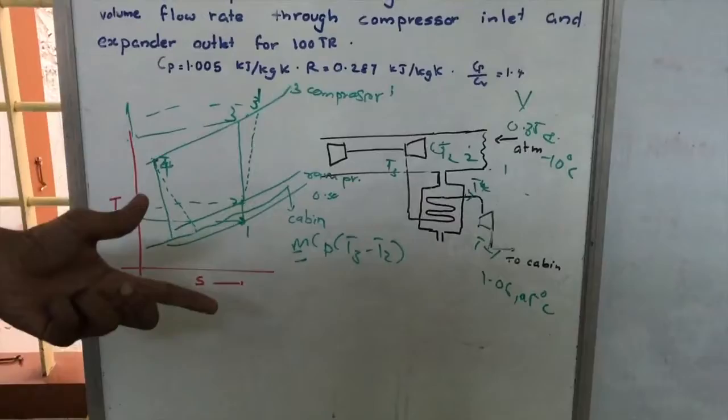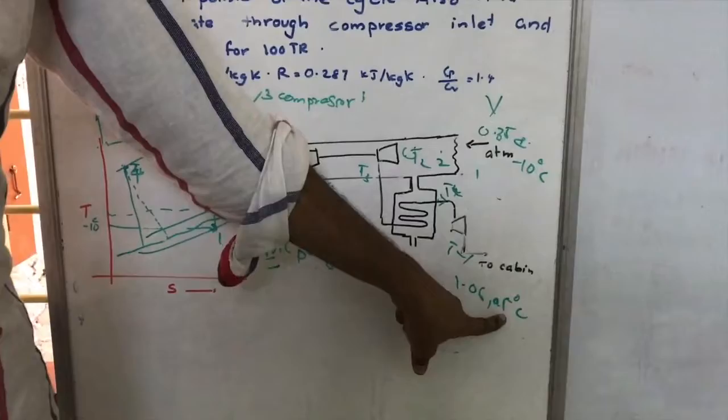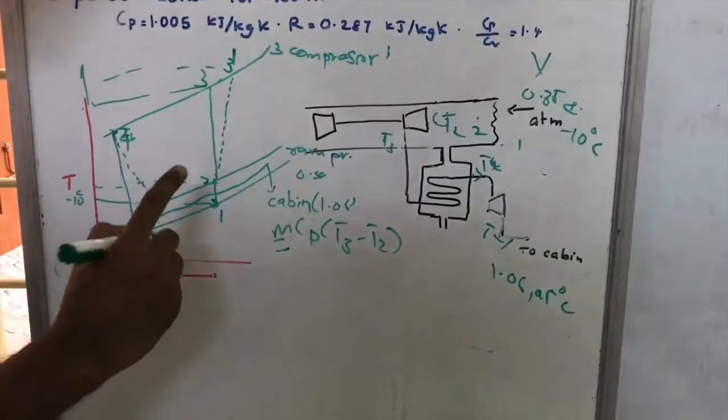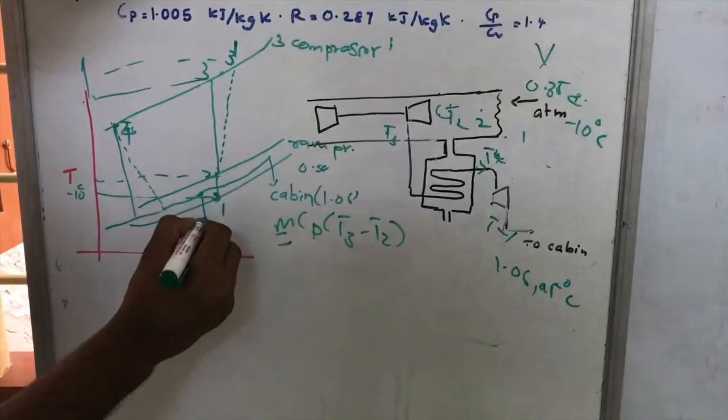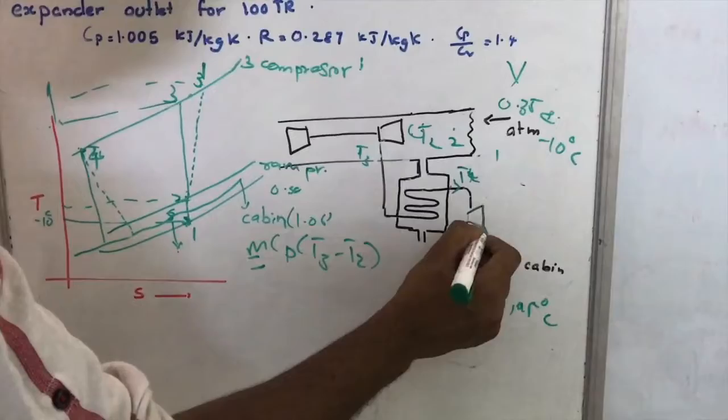This air is fed to the cabin. At the cabin, the pressure is 1.06 bar and the temperature is 25 degrees Celsius. So the cabin pressure line is at 1.06 bar.